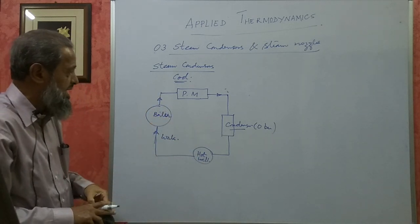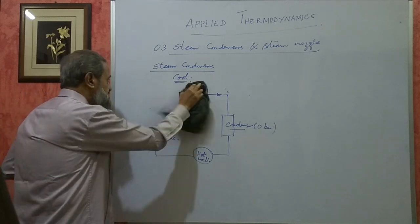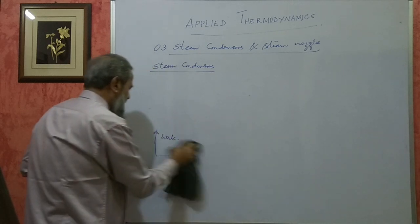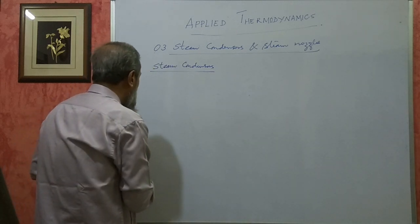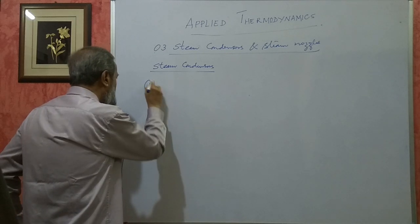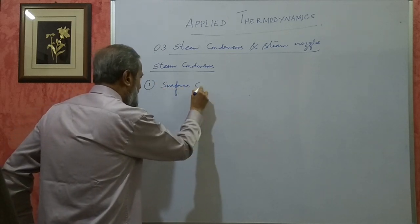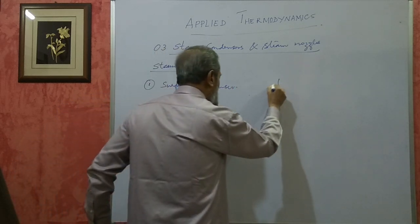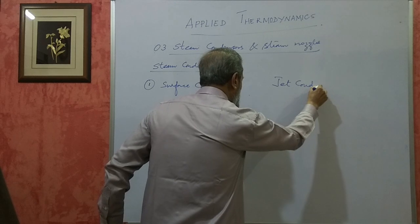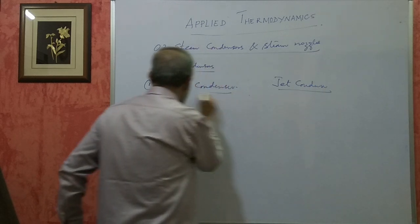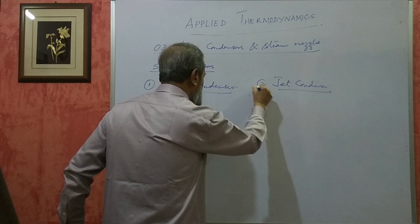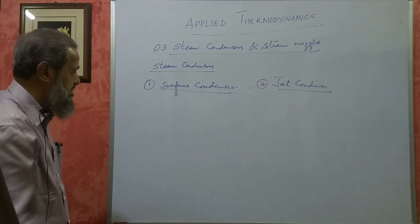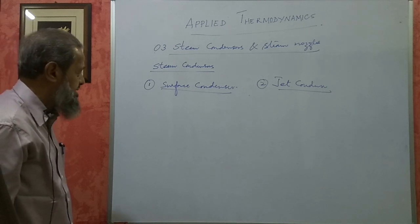These are some of the advantages of using steam condensers. You have to know what are the advantages, then how they are classified. They are classified mainly into two types: one is surface condenser and the other is jet condenser. You must know the advantages and disadvantages comparison between surface condenser and jet condenser.